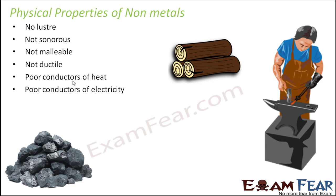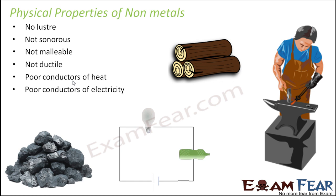Nonmetals are also poor conductors of electricity, and that is why your wires are made of metals and not of wood or coal. Think of a circuit with a bulb and a battery connected by metal wires. If you place a plastic bottle in between to complete the circuit, the plastic — being a poor conductor — prevents the electric current from flowing, and therefore the bulb doesn't glow. This shows that nonmetals are poor conductors of electricity.